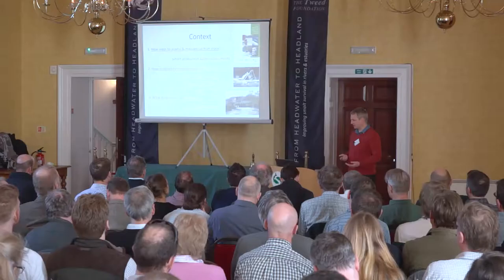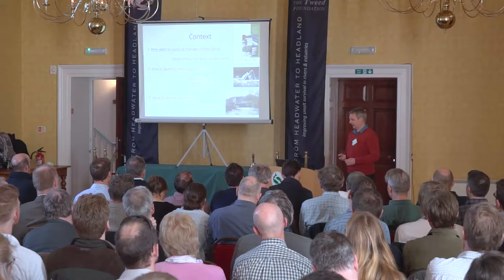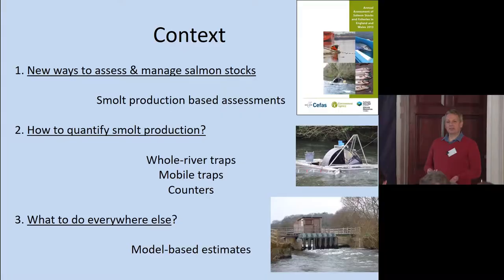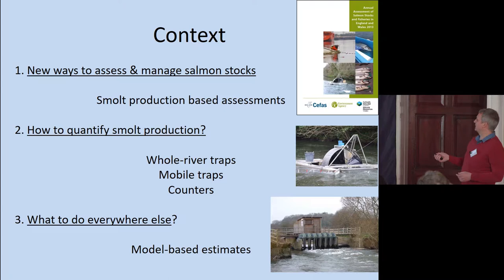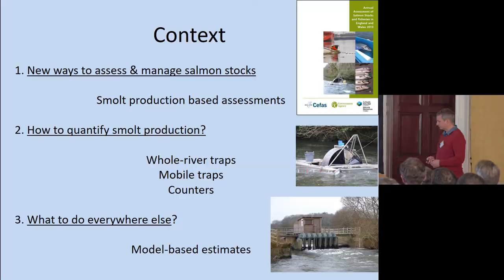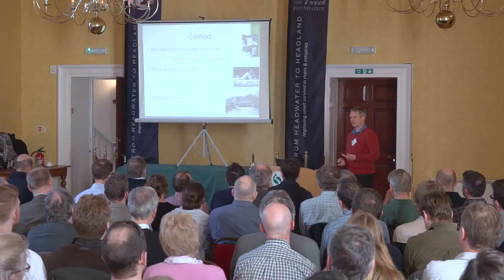So the context: we have at the moment salmon stock assessment primarily based on counts of adults and catches. But there's been more and more talk about smolt production-based assessments. How can you quantify your smolt production? Well, if you're really lucky, you've got a whole river trap. You've also got potentially mobile traps — this is the rotary screw trap that we fish down on the Tamar. And we've also got whole river traps and counters. If you haven't got any of this, what are you going to do? Are you going to have to use some sort of model-based estimate?